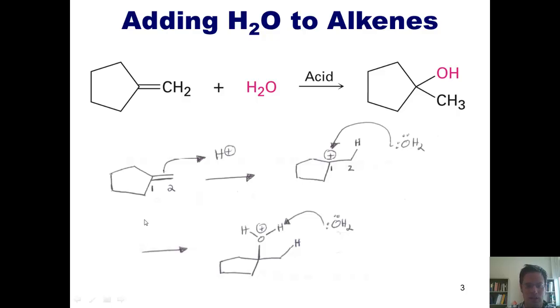The electrons that are being shared by the hydrogen and the oxygen are broken and get thrust into this oxygen. When these two electrons get thrust into this oxygen, it neutralizes that positive charge and gives us this product. This is why we get the product that we get.